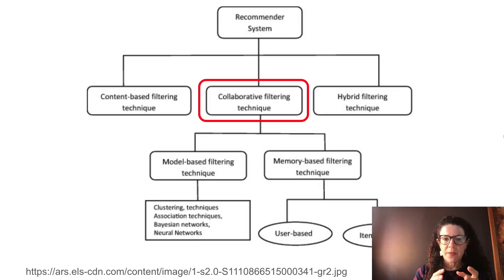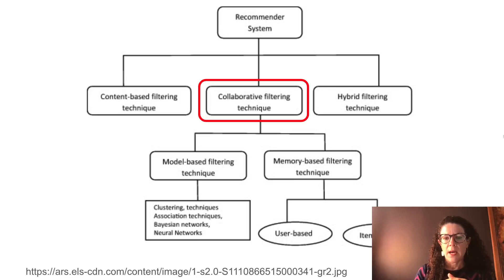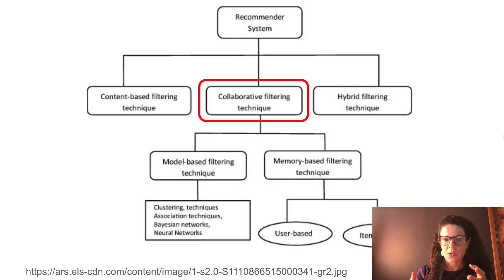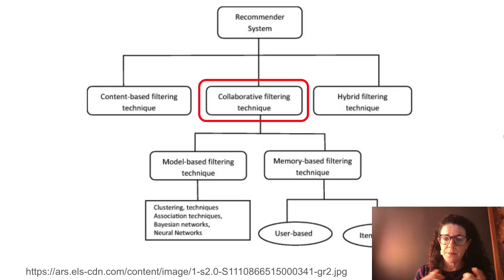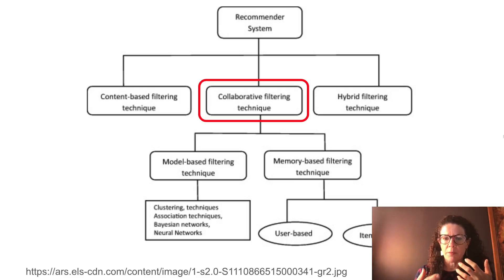Here is a diagram showing different types of recommender systems. There are content-based systems, collaborative filtering techniques, and most real-world systems use a hybrid combining both. Within collaborative filtering, there are two types: memory-based techniques, which use K-nearest neighbors, and model-based techniques, where you actually fit a model. We'll talk about both today.